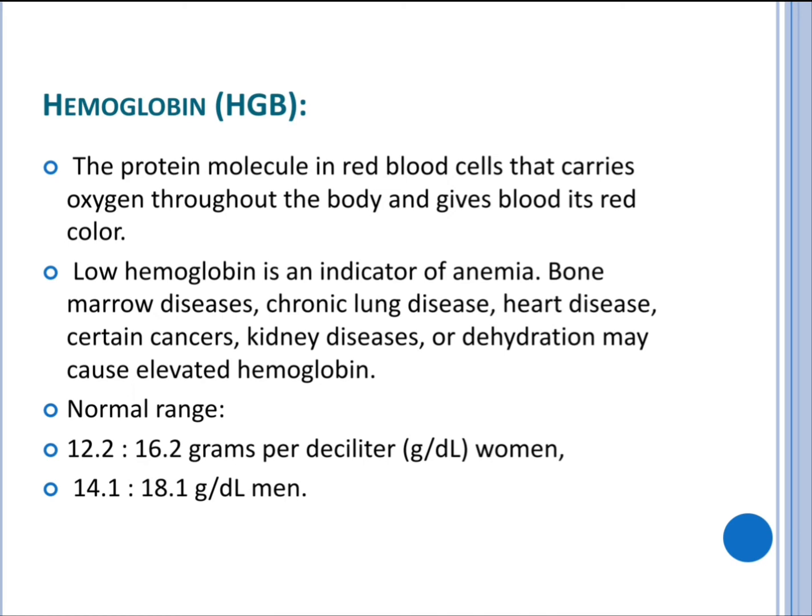Hemoglobin is the protein molecule in red blood cells that carries oxygen throughout the body and gives blood its red color. Low hemoglobin is an indicator of anemia, while bone marrow diseases, chronic lung diseases, heart disease, certain cancers, kidney diseases, or dehydration may cause elevated hemoglobin. The normal range of hemoglobin is 12.2 to 16.2 grams per deciliter in women and 14.1 to 18.1 grams per deciliter in men.